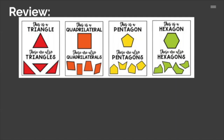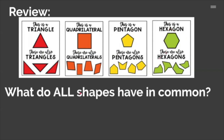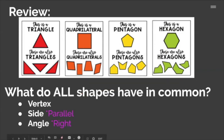Let's do a quick review. We discussed that a triangle is a name for a shape that has three sides. A quadrilateral is any shape that has four sides. Any shape that has five sides is called a pentagon, and shapes that have six sides are in the hexagon family. All shapes have a vertex (corners), sides, and angles. In the next few slides we're going to focus on parallel sides and right angles, and then that'll conclude the rest of our lesson.